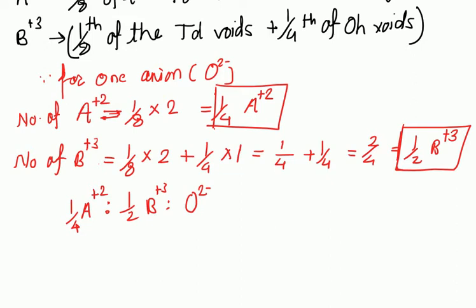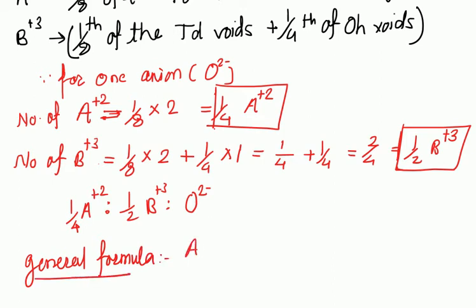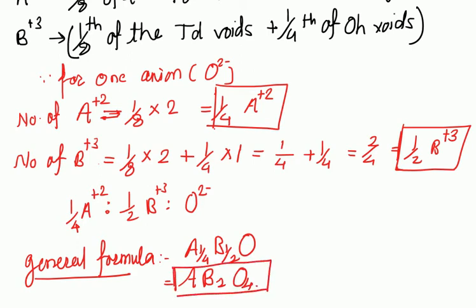From this ratio, the general formula is A^(1/4) B^(1/2) O, which when multiplied by 4 gives AB₂O₄ — the same spinel structural formula. In this way we can determine the normal spinel and the inverse spinel.